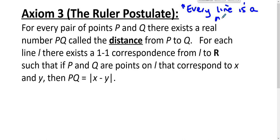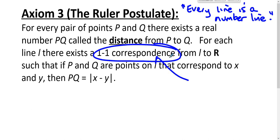What the ruler postulate basically says is that every line is a number line. We can correspond every point on the line to a real number, and it's a one-to-one correspondence — what your Math 239 class would have called a bijection. When the author refers to one-to-one correspondence, he really does mean onto also; every real number corresponds to a point on the line.